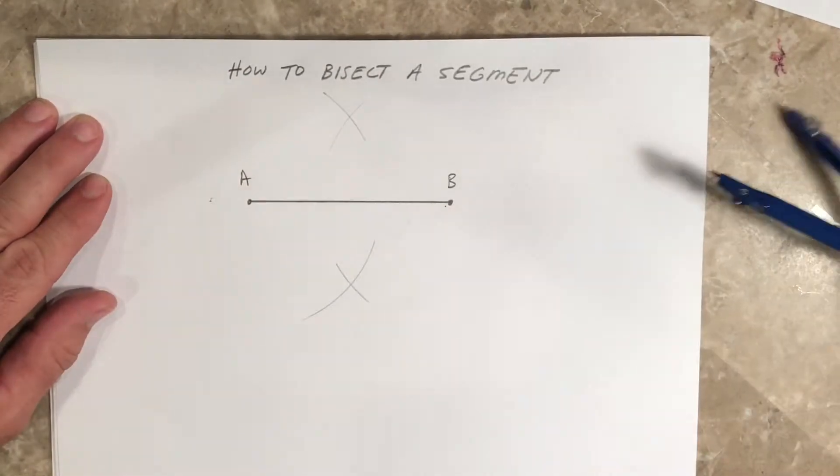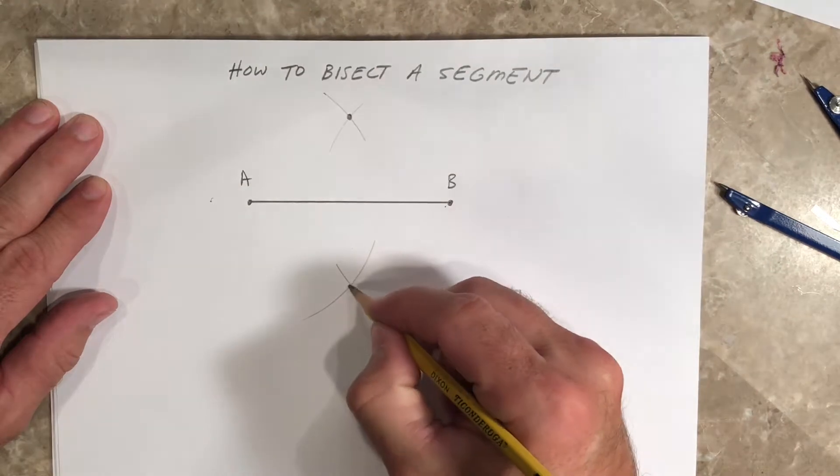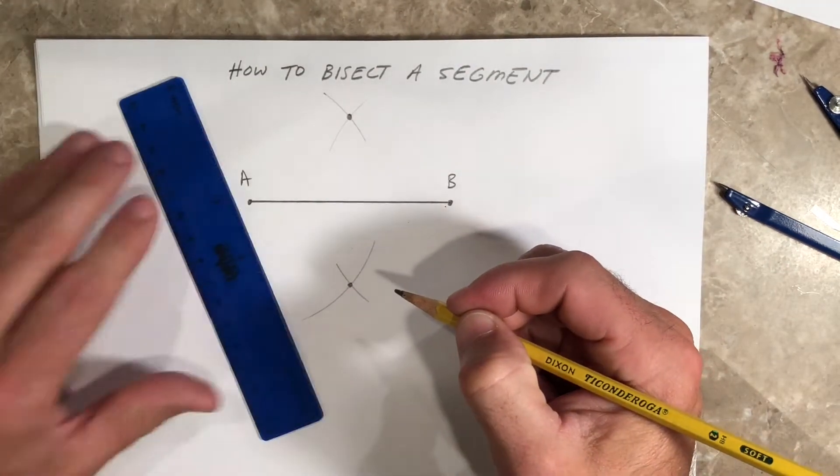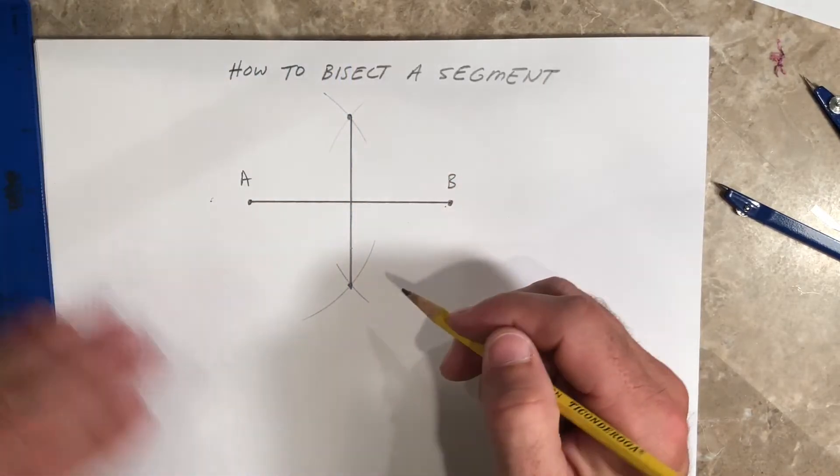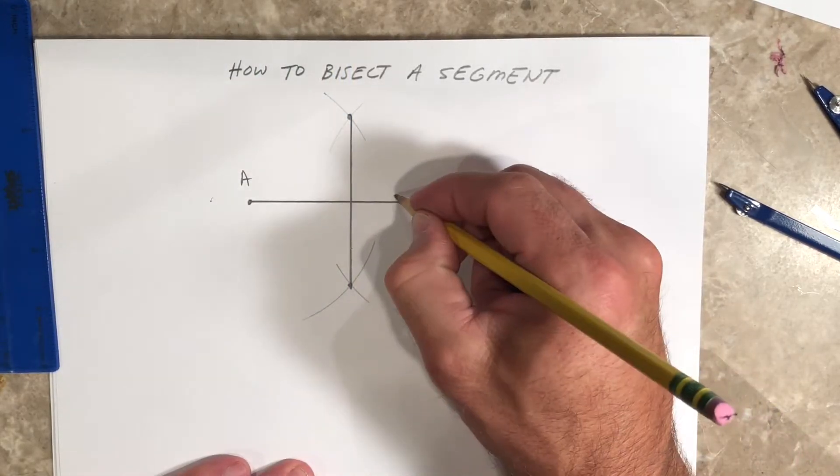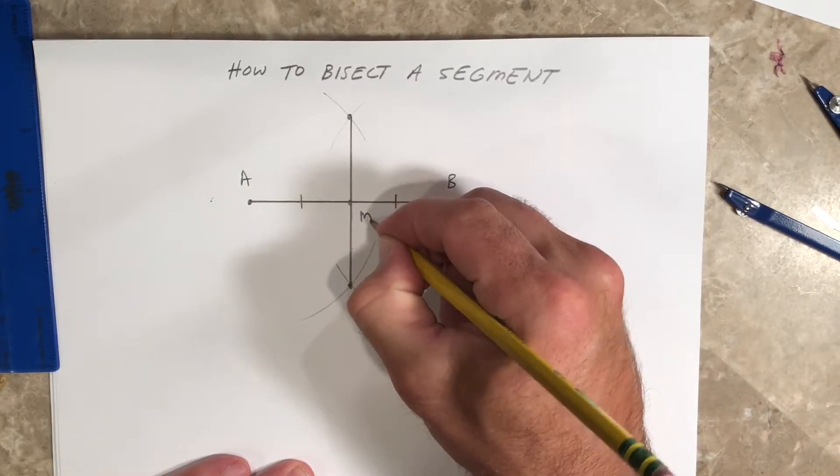Now something really cool happens. You can connect those two intersection points and make a segment. The sweet thing about this one is not only does it bisect AB—we basically just chopped AB in half—we'll call this point M the midpoint.